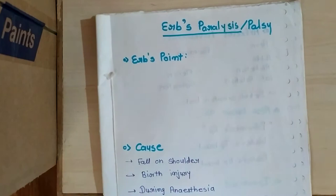Hello everybody, so our today's topic is Erb's Palsy or also known as Erb's Paralysis. It is the most important applied anatomy for brachial plexus, also for first year MBBS.